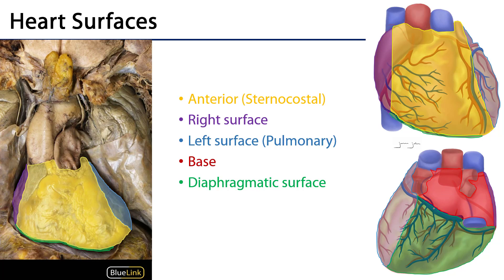Let's turn our attention to the surfaces of the heart. Let's think of the heart as a three-dimensional organ, because it is. We can identify several cardiac surfaces. First, there is an anterior surface, also known as the sternocostal surface, because it would be deep to the sternum and the ribs — seen here colored in yellow. We have a right surface, colored here in purple, though we would need a right lateral view to fully appreciate that. There is a left surface, also known as the pulmonary surface, which we can get a very nice view of here.